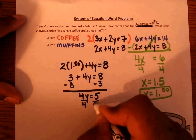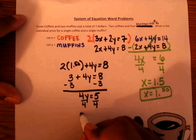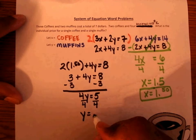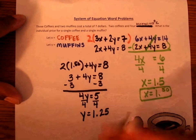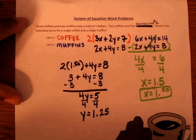Divide by four, and Y equals 1.25. In money, this is a dollar and twenty-five cents.